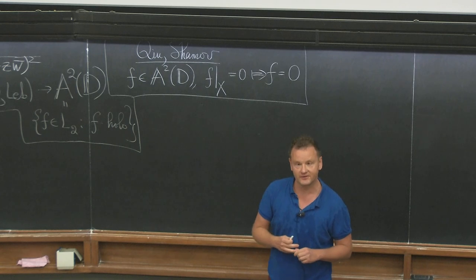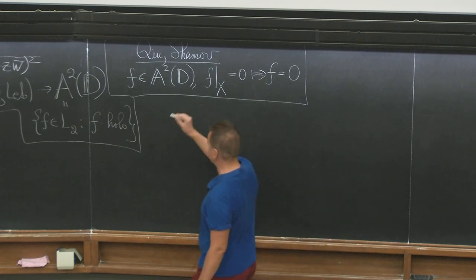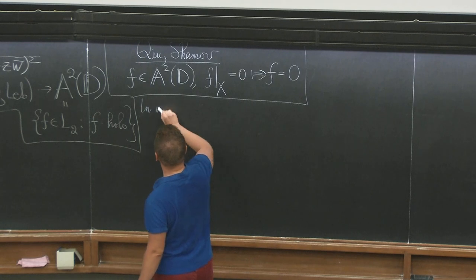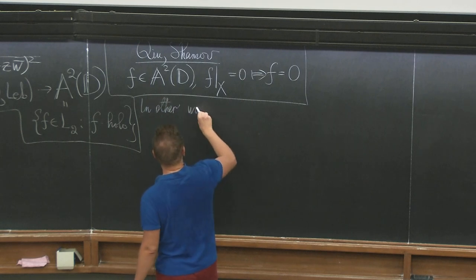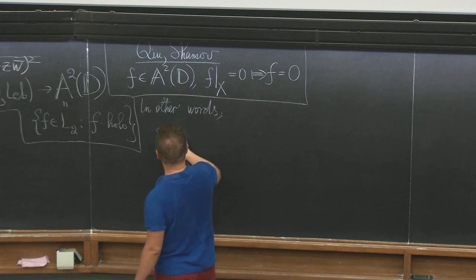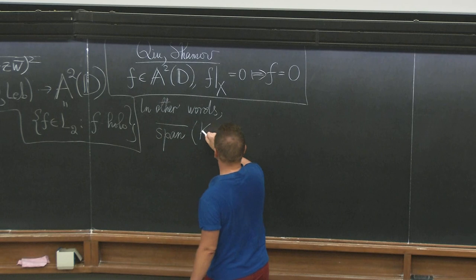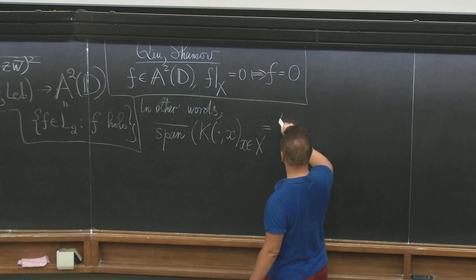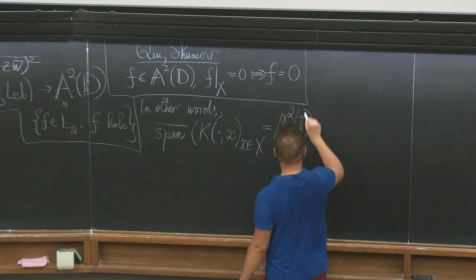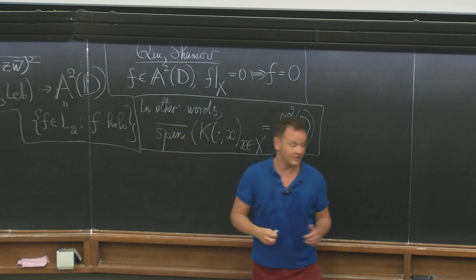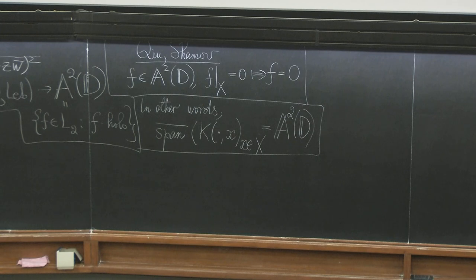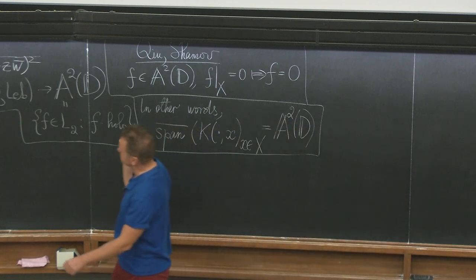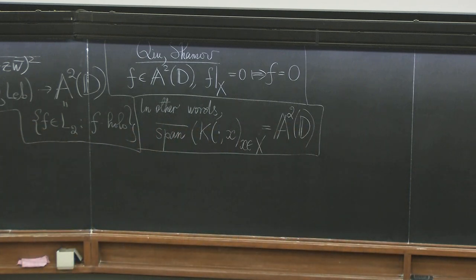In other words, the span of the functions K(x, ·) over x in the configuration x almost surely coincides with the full Bergman space. This statement was conjectured by Lyons and Peres, who also — Lyons — proved such a statement in the discrete case, and Gauch proved it under the additional assumption of rigidity, to which I will return in more detail later.